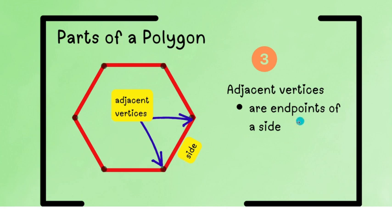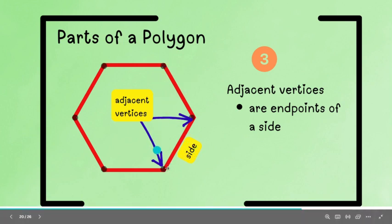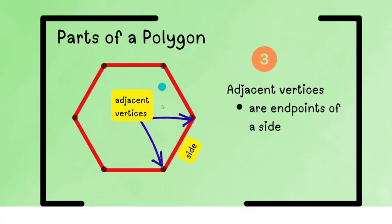So, based on the definition, they are not endpoints of a side. Dapat, isa-isang line lang sila. And they are the endpoints of one side. Now, in this case, malayo siya dito. Hindi siya endpoints nitong side na to. Endpoints siya nitong side na to. So, they are not adjacent vertices.